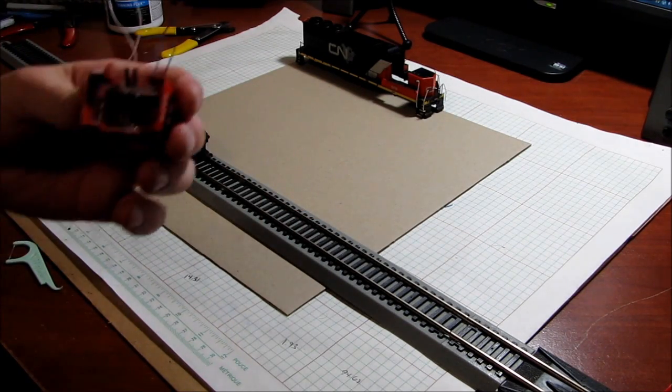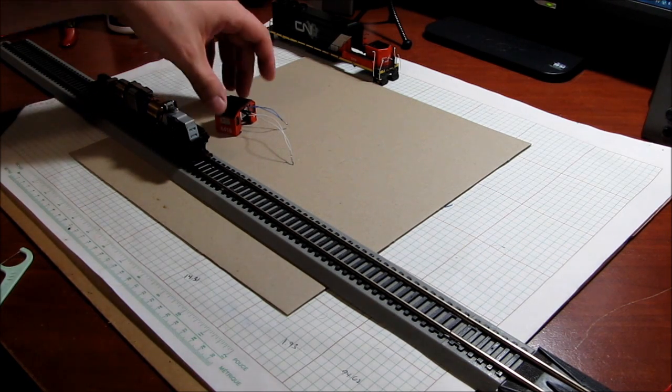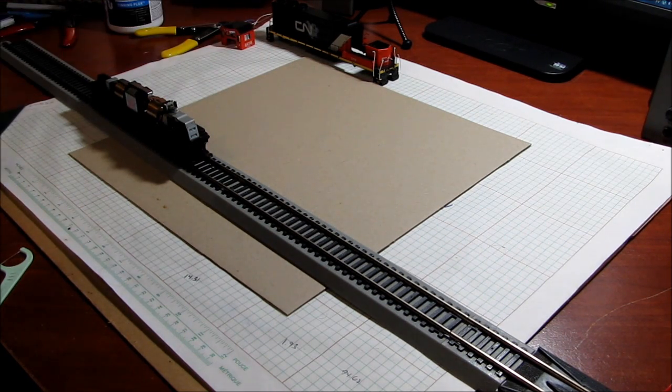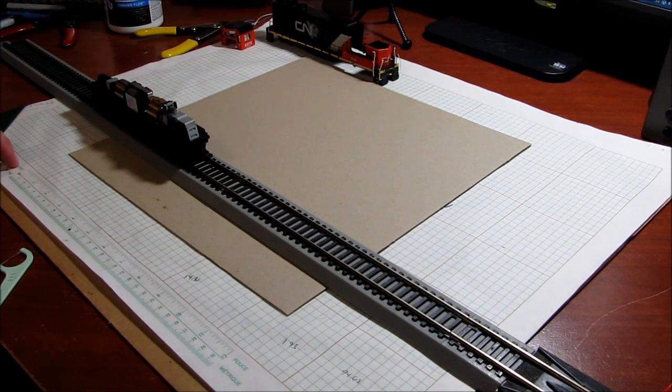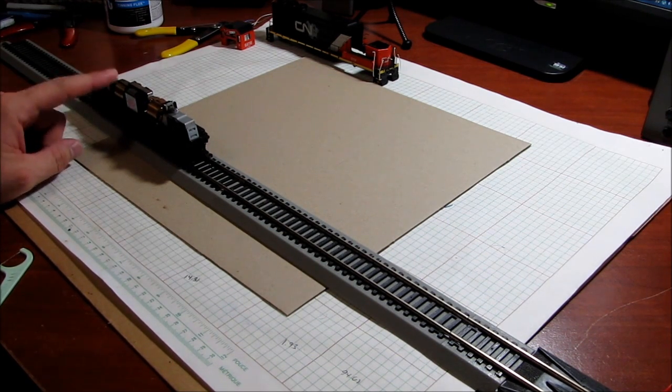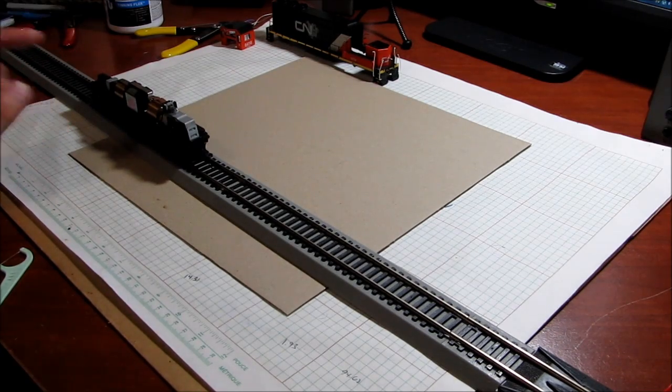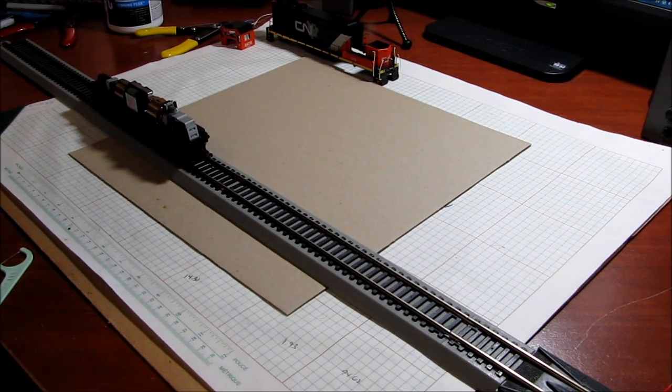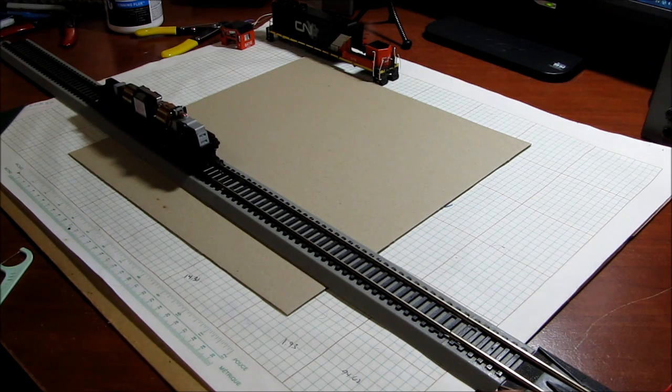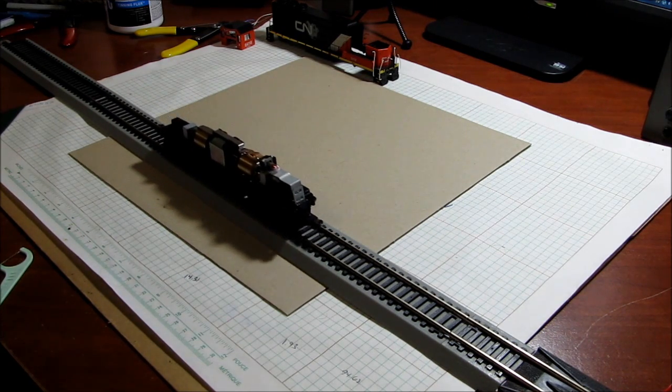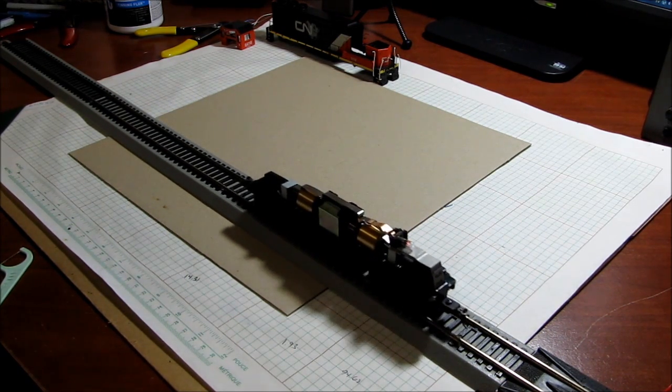One of the very first things you have to do before you do a conversion to DCC is test the train to make sure it's running the way you want it to run before you go ahead and do the conversion. You just put it on the track and test it, make sure it's running really nicely smooth, the motor's running good and strong.